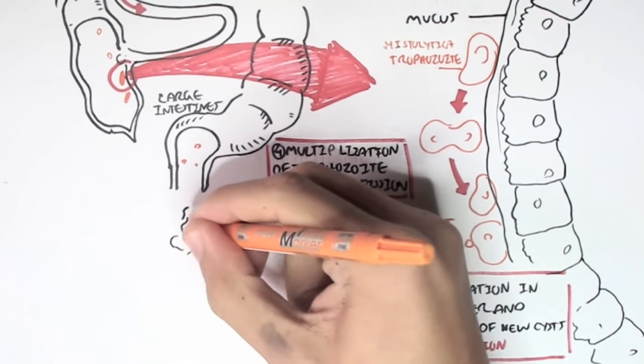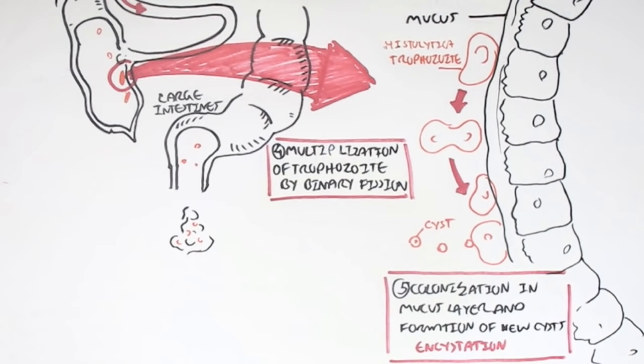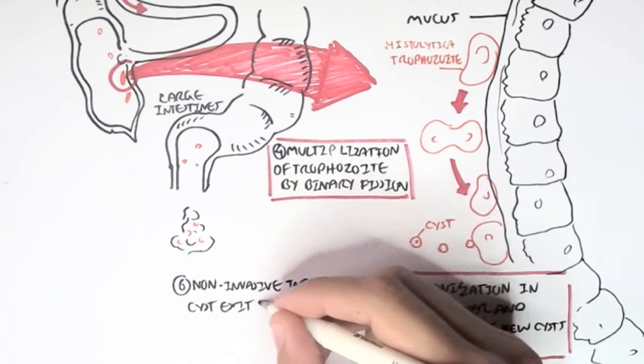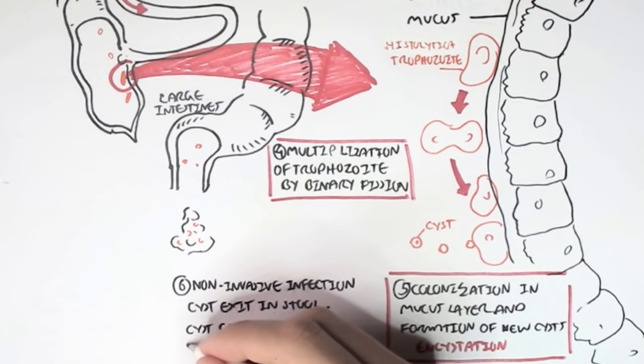The cysts will just exit out of the body in stool, in the feces, and then the cysts can infect new humans through contamination by contaminating food or water.